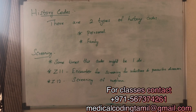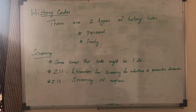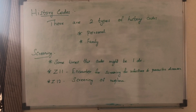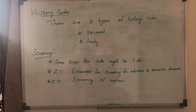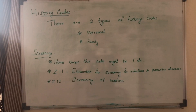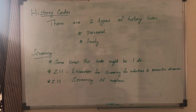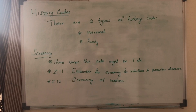There are different types of history codes. The first is the personal history code, and the second is the family history code. The personal history code refers to one person's past medical history — a condition that was treated and is no longer present. The family history code refers to any medical history present in a patient's family.